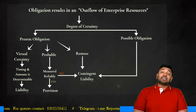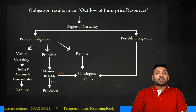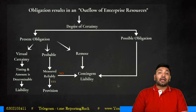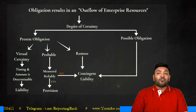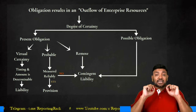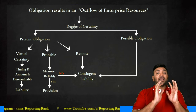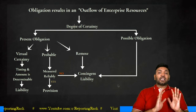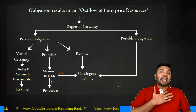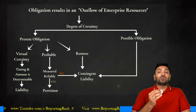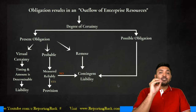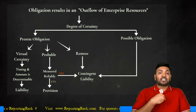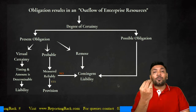Any obligation results in an outflow of enterprise resources — in the form of parts being replaced, labor, or cash. Whenever there's an outflow of enterprise resources, you need to measure the degree of certainty. Is it a present obligation or a possible obligation? For example, someone has filed a patent infringement case against me — that is a possible obligation, because if he wins the case, possibly I'll have to pay a certain amount.